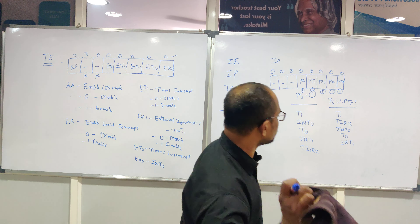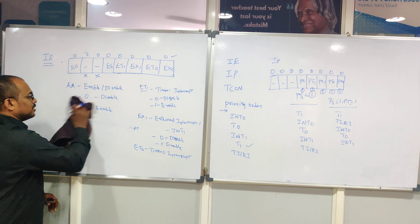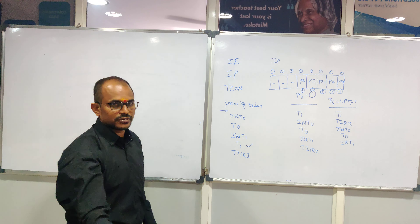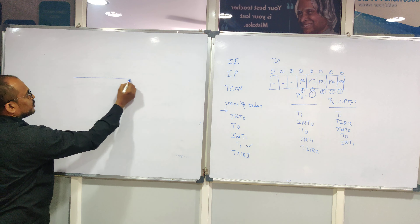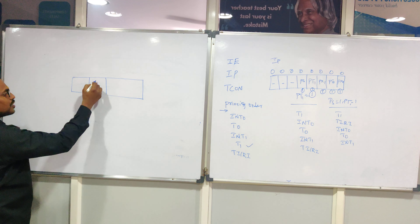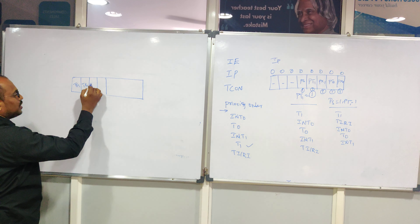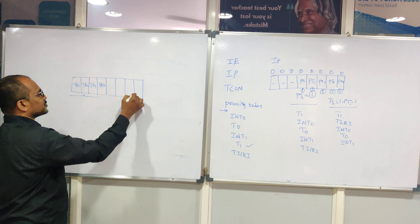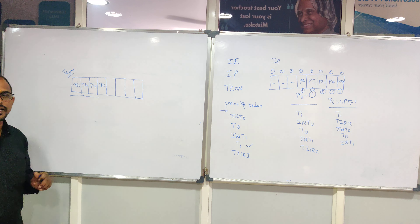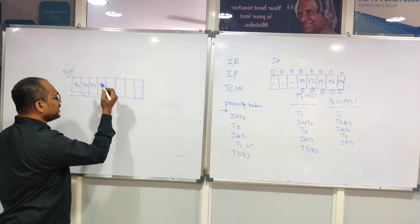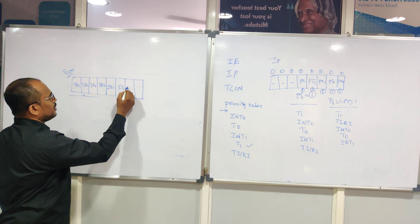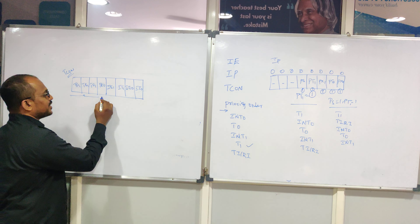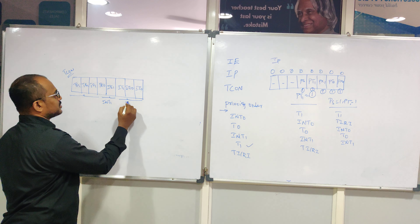The third register is TCON — Timer Control register. The 4 MSB bits (TF1, TR1, TF0, TR0) were already discussed in the timers section. Now we focus on the 4 LSB bits: IE1, IT1, IE0, and IT0. These 4 bits work on the 2 hardware interrupts — IT1 and IE1 for INT1, and IT0 and IE0 for INT0.